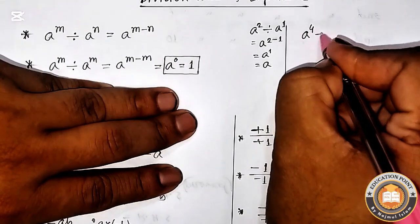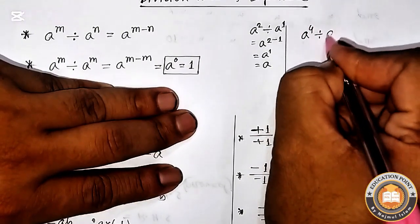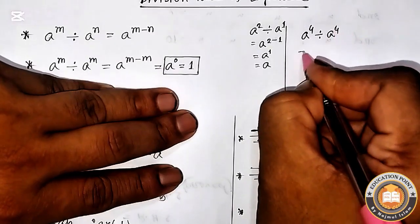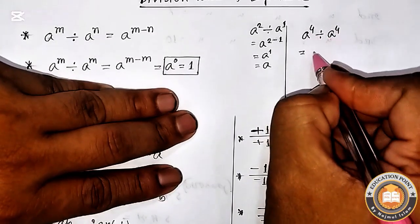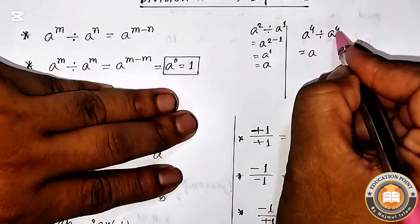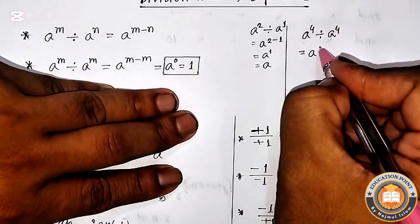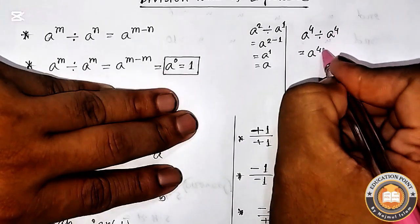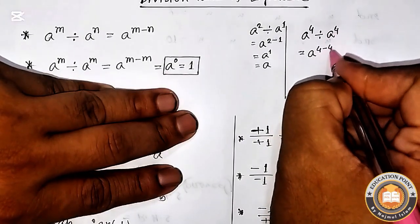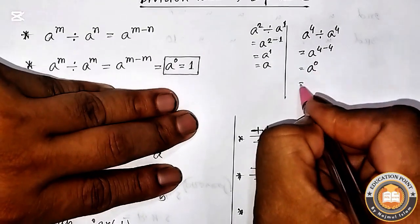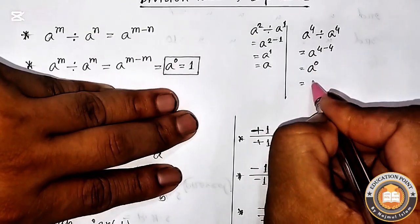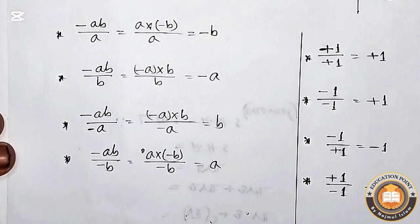For example, a^4 divided by a^4: the bases are similar and powers are similar, so powers will be subtracted giving a^0, which equals 1. Now we will learn about division of expressions with signs.